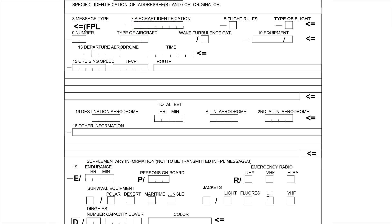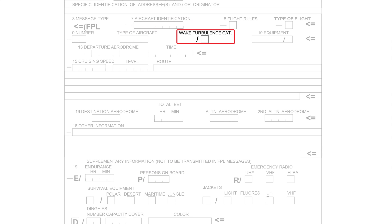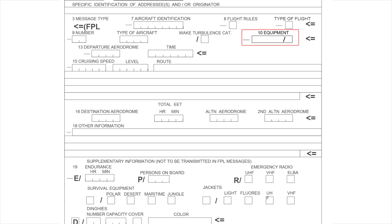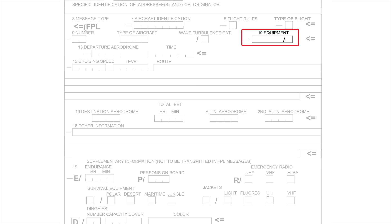Other items will be new, such as a wake turbulence category and type of flight. The most interesting change, though, is found in the Equipment Suffixes box — Box 10.